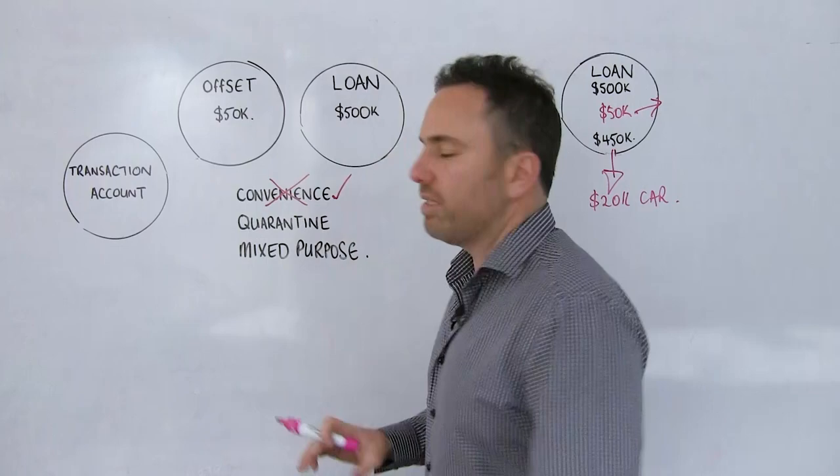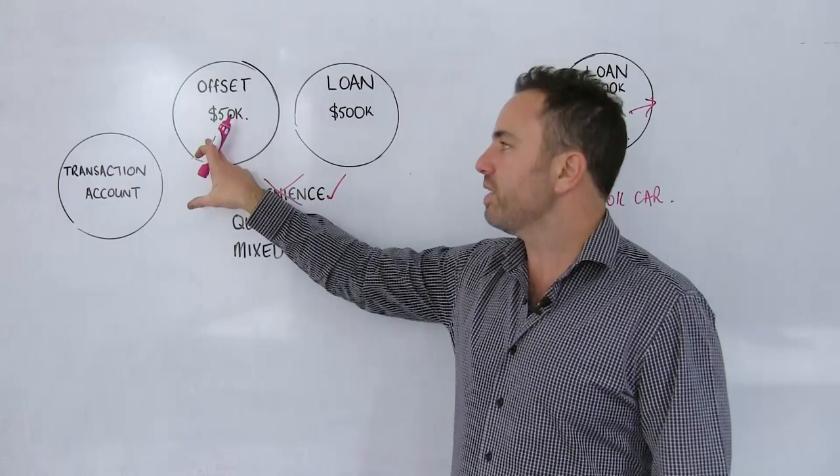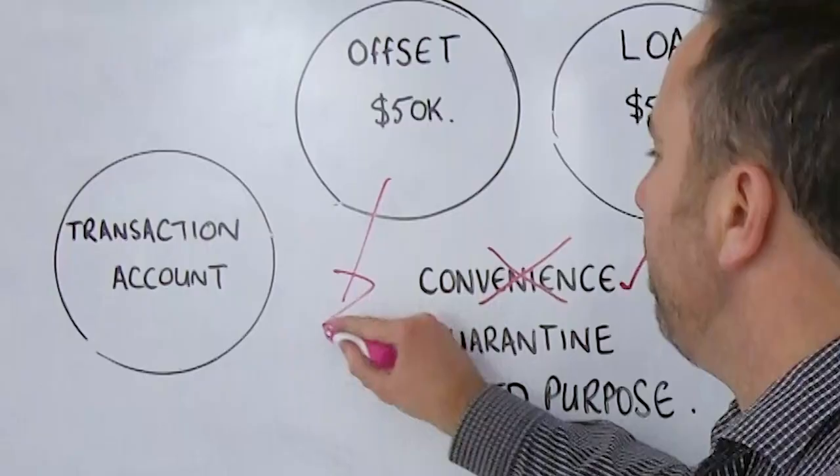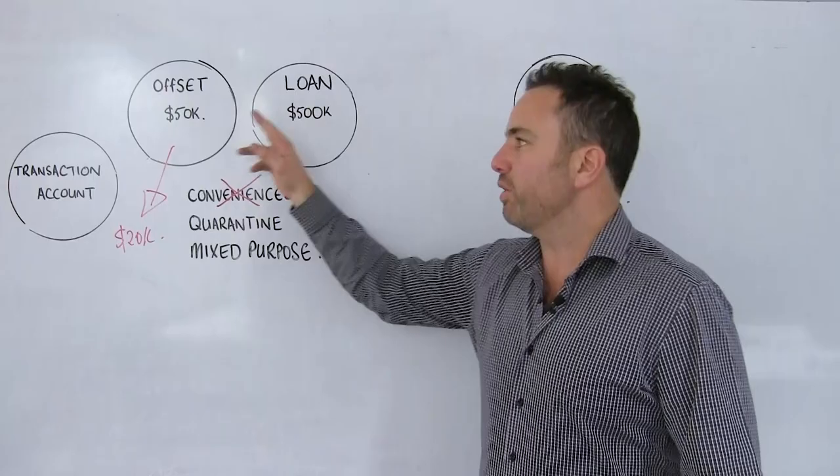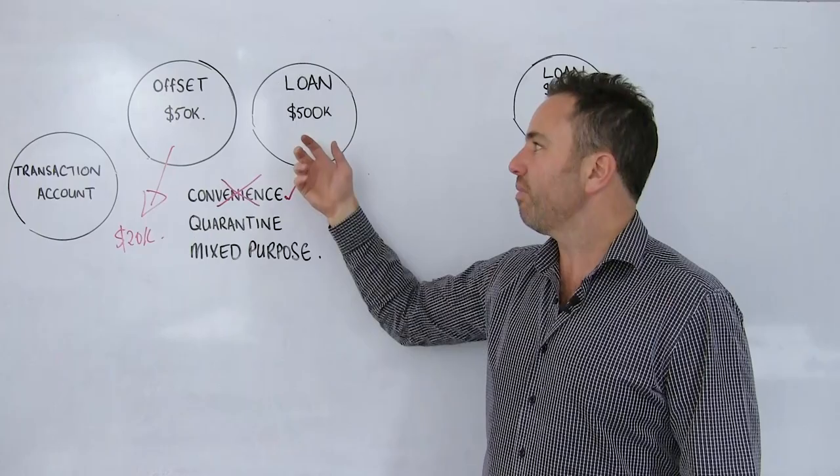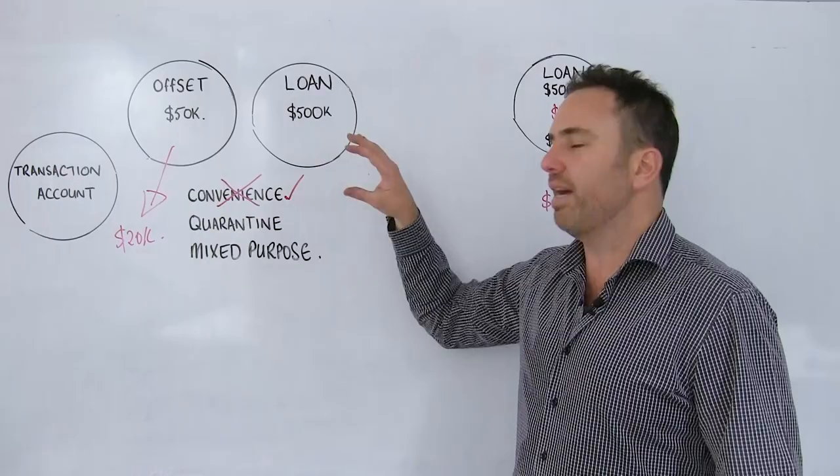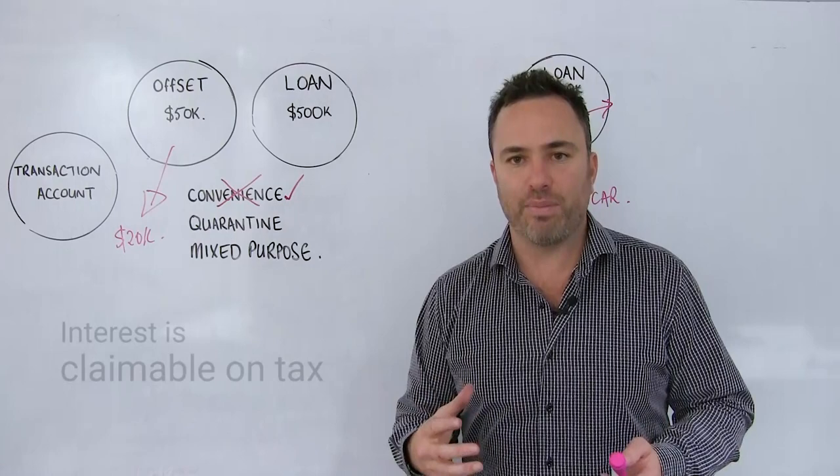Jump over here and in the same scenario, the loan balance is preserved here at $500,000 and instead of having the $50,000 in redraw, as we've discussed before, I've got it in an offset account. If I wanted to access and take $20,000 out for my car, I'd simply take it from the offset account and my offset account balance would reduce to $30,000 and I would be paying interest on $470,000. No different from here but the difference being is that's clean. The $500,000 investment loan has not been touched and any interest that's charged against it is claimable on your tax.